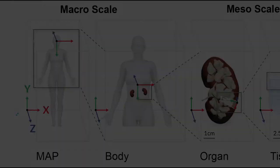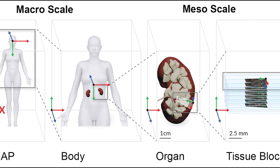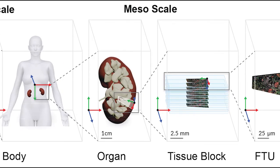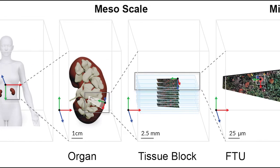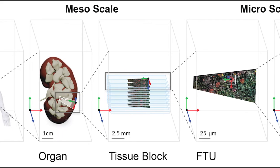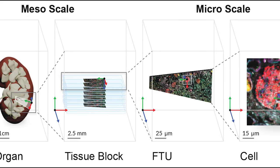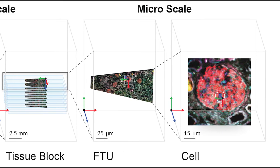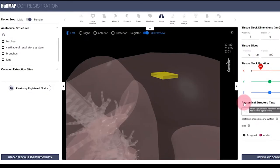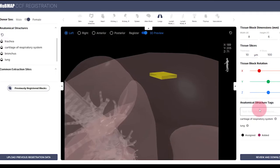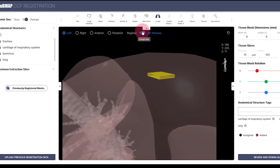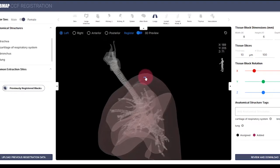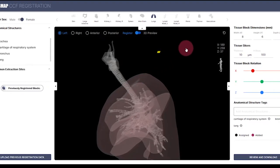Finally, the CCF HRA spatial ontology provides the framework for the WHERE information. Spatial data describes the 2D and 3D shapes of entities and their physical size, shape, location, and rotation, from the whole body level down to single cells. A unique feature of the CCF HRA is the interlinkage of the ASCT+B to the 3D reference organs, which supports new forms of semantic and spatial queries.